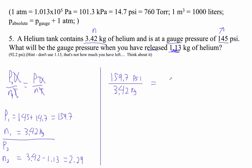And then that equals pressure 2, which we're going to figure out, divided by 2.29. So there's less helium, so there'll be less pressure, right?